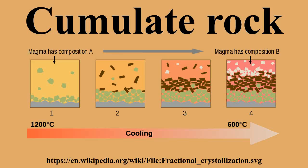Cumulate rocks are igneous rocks formed by the accumulation of crystals from a magma, either by settling or floating. Cumulate rocks are named according to their texture, which is diagnostic of the conditions of formation of this group of igneous rocks.